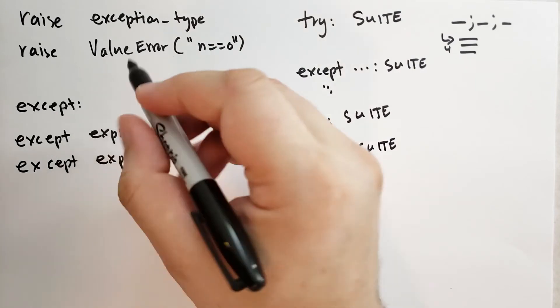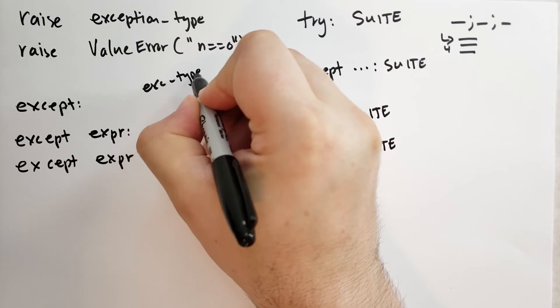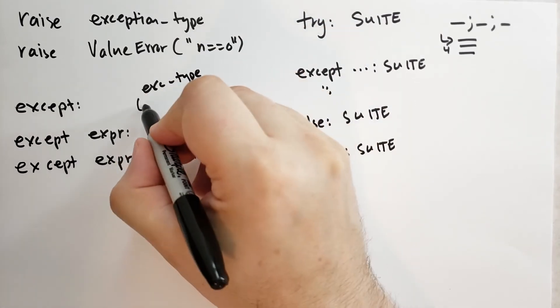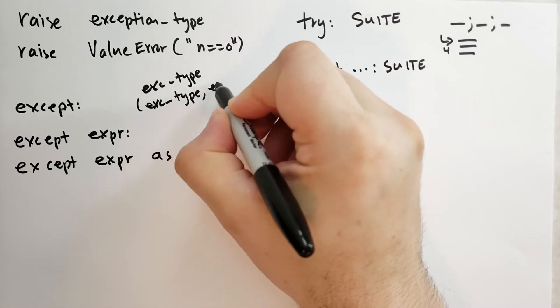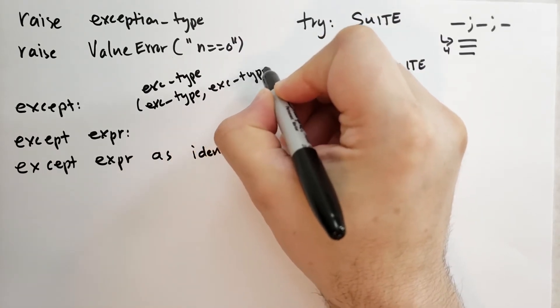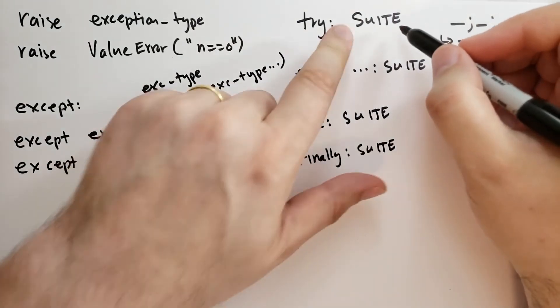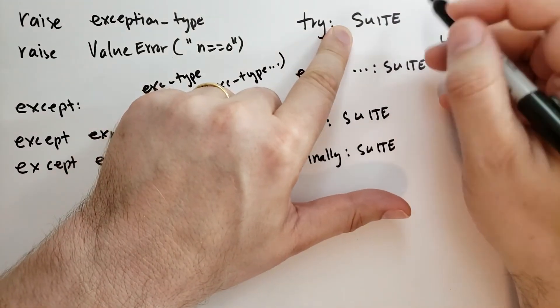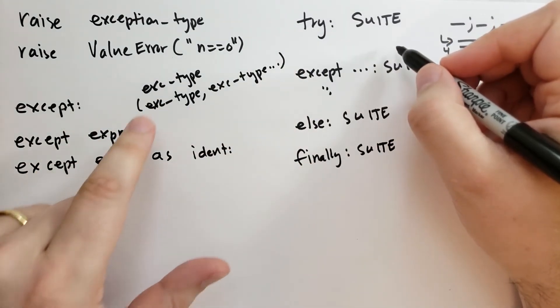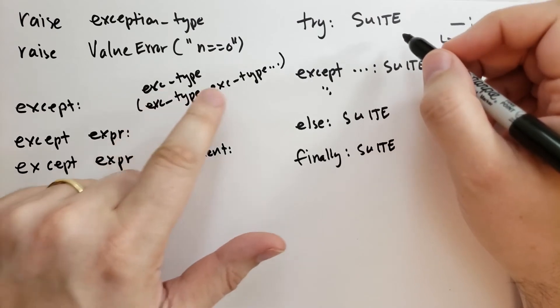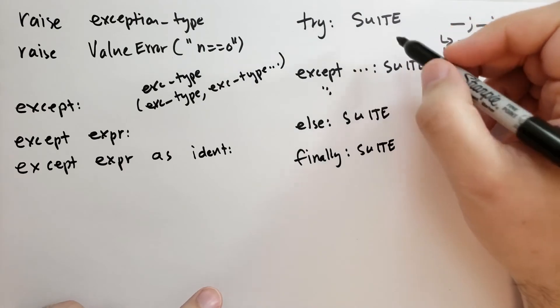The expression that's inside of the except line can be a single exception type, or a list of exception types, separated by commas, surrounded by parentheses. When the try suite raises an exception, each of the except blocks are compared one after the other. If the exception is of the exception type, or one of the exception types listed in this list, then that except block is run, and none of the others are run.